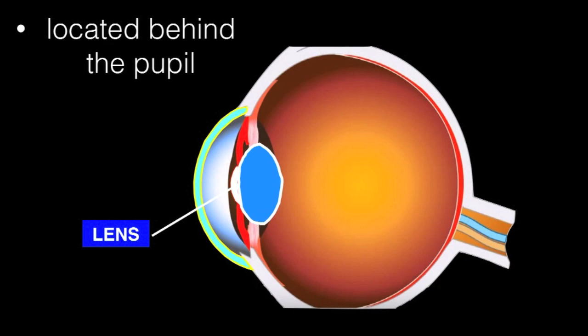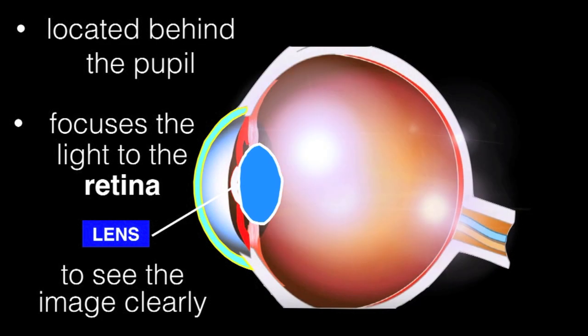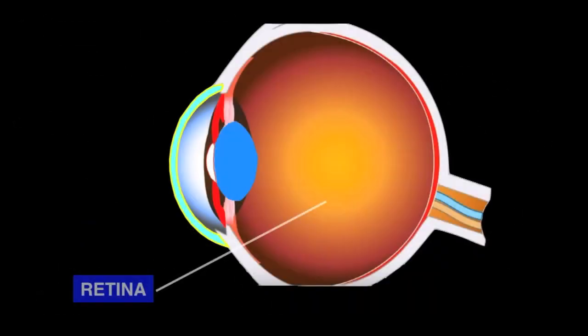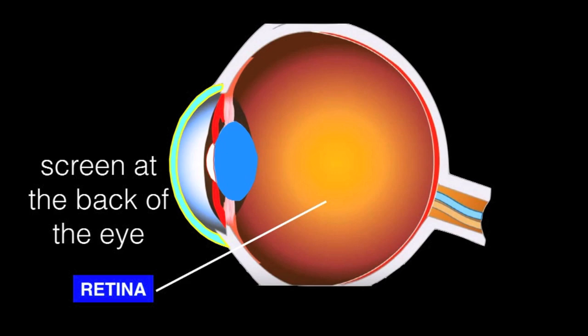The lens is located behind the pupil. The lens focuses the light to the retina to see the image clearly. This part is called the retina. It is considered as the screen at the back of the eye.